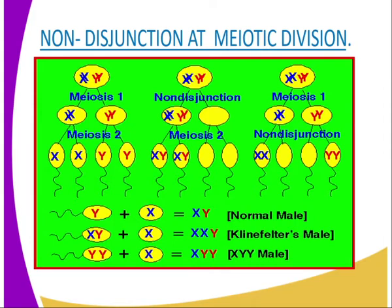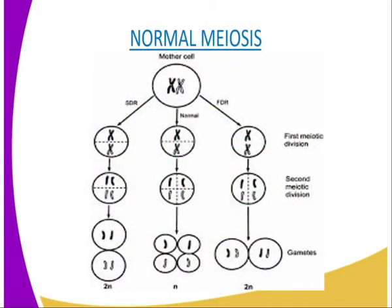Other examples of non-disjunction in human beings include Klinefelter syndrome and Turner syndrome. We shall look at these in our later lessons. Polyploidy is another case resulting from non-disjunction. Generally, non-disjunction involves several defects which include Klinefelter syndrome, Turner syndrome, and the non-disjunction effects we have already discussed.